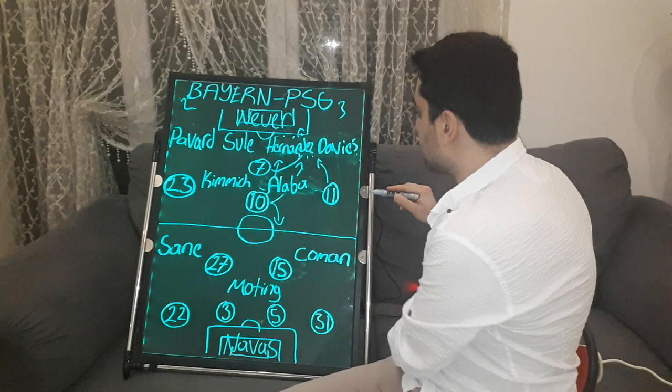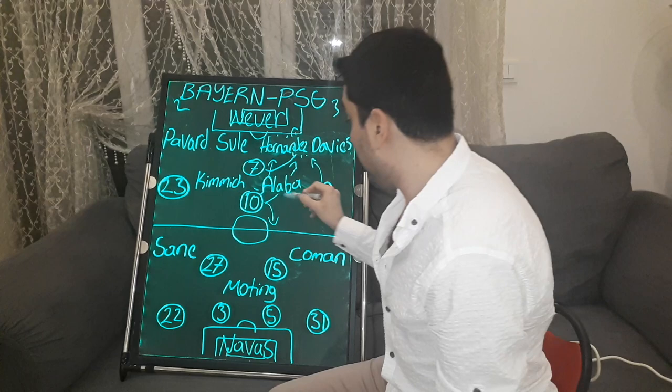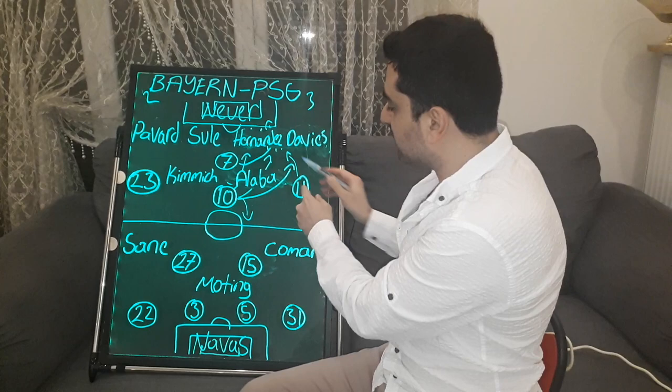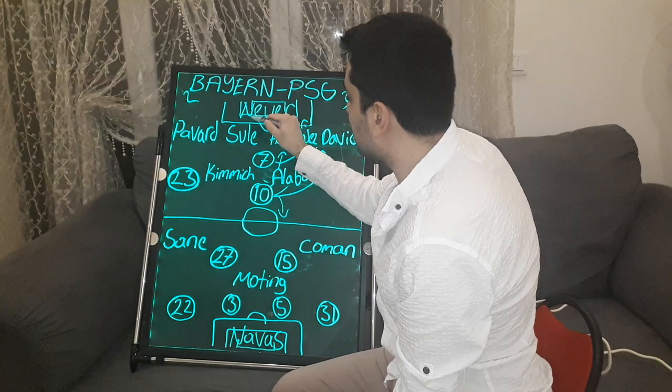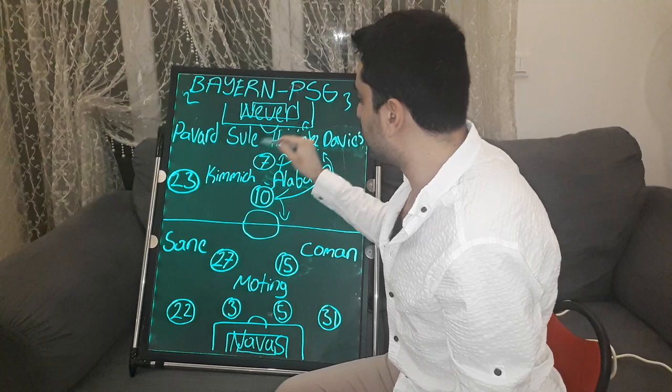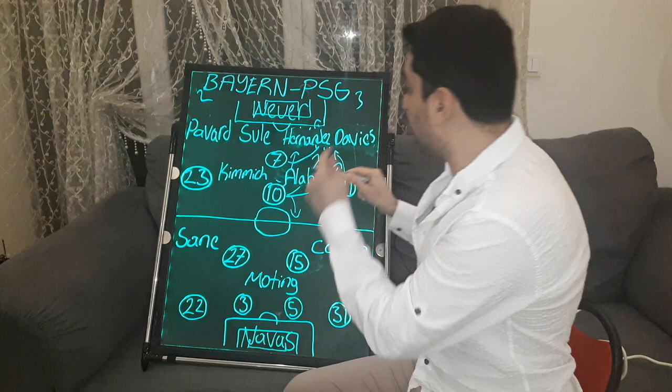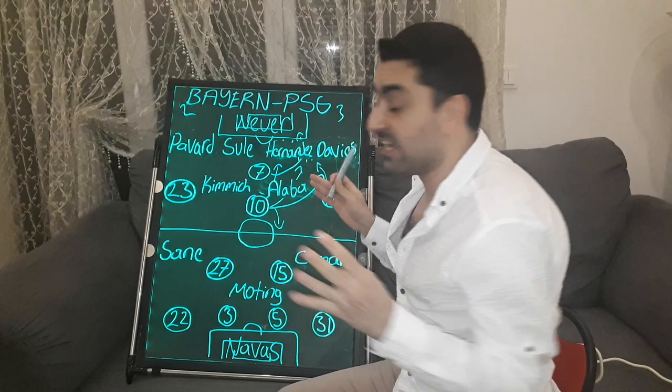Despite the changes, Paris Saint-Germain found a second goal. Neymar moved to the right wing and centered the ball into the penalty area. Martinos came forward and got into the Bayern box, staying free to score the second goal for PSG. It was a very big defensive mistake from Bayern Munich — Schule left Martinos unmarked, allowing him to score.